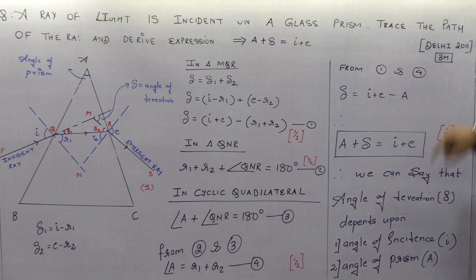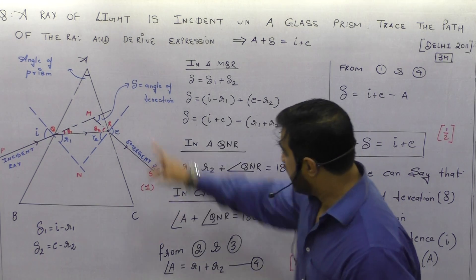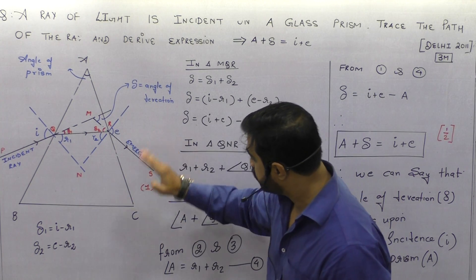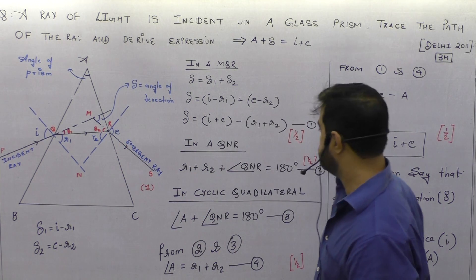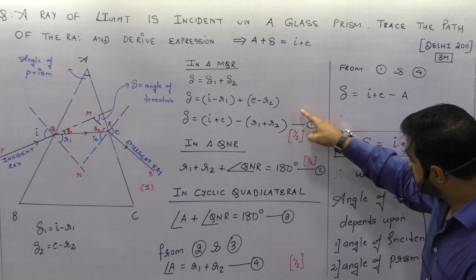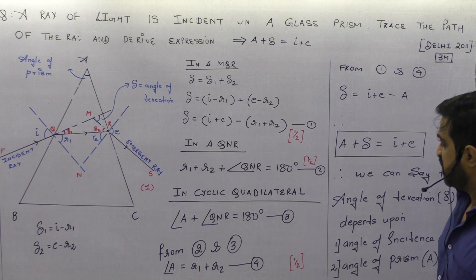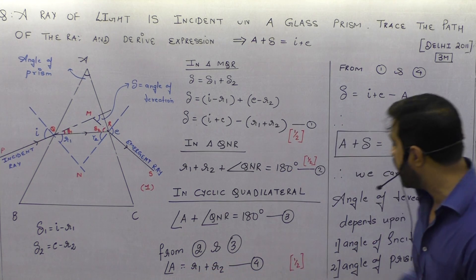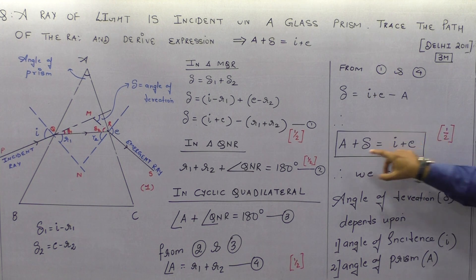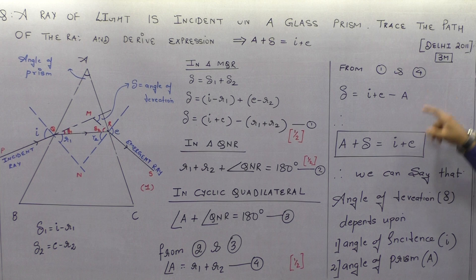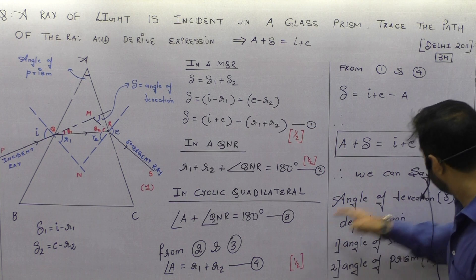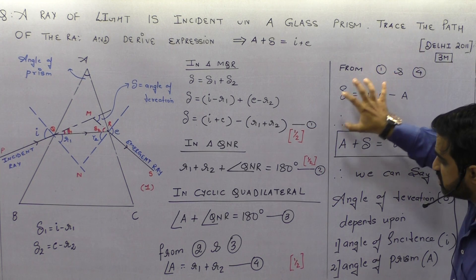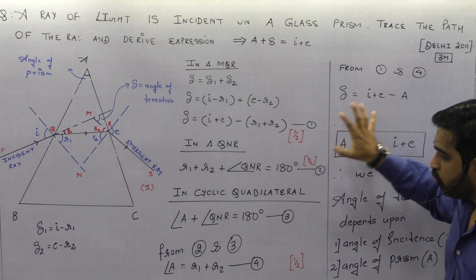This question is for three marks. The diagram will fetch you one mark. Equation 1 will fetch half a mark; equations 2 and 3 will fetch half a mark; equation 4 will fetch half a mark; and the main equation A plus delta equals i plus e will fetch half a mark. That adds up to one plus one plus one, totaling three marks.